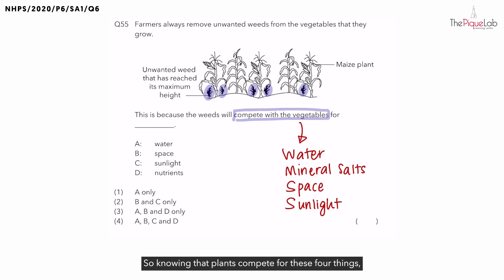So knowing that plants compete for these four things - water, mineral salts, space, and sunlight - students, when they answer this question, they are going to choose water, space, sunlight, and even nutrients because nutrients refers to mineral salts. So students are going to choose all four options and they're going to choose number four as their answer.